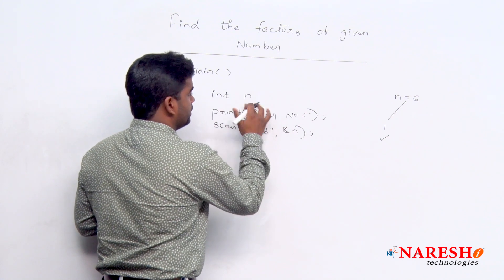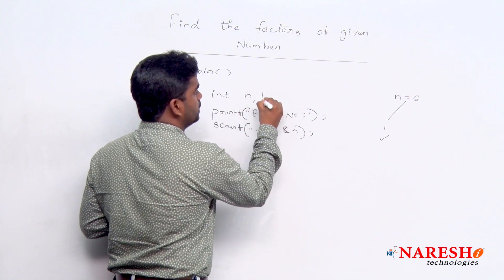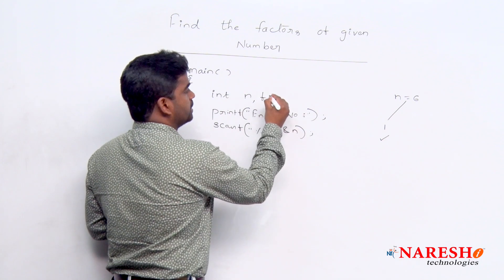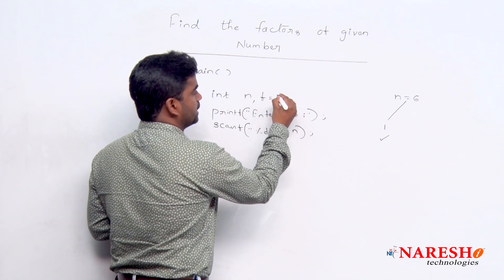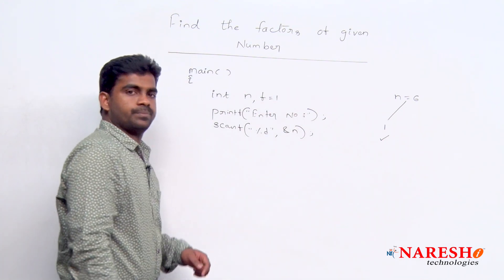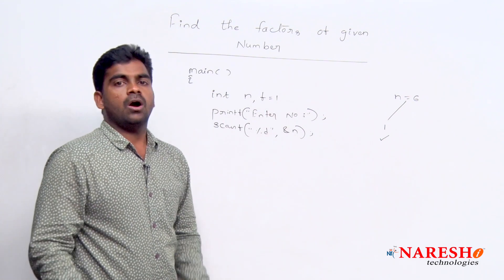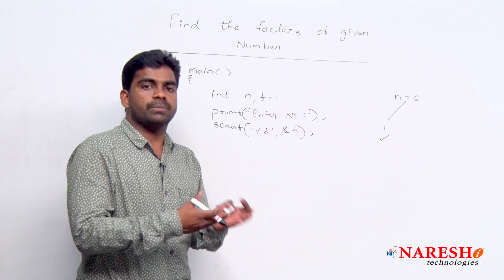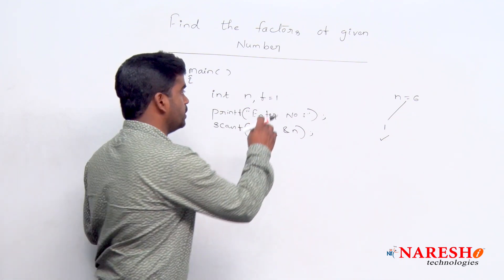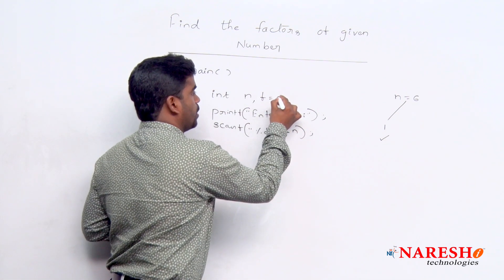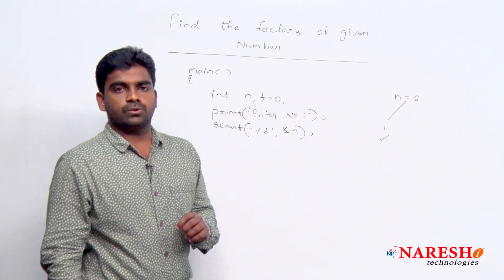Here we are taking one variable, suppose factor count f. That initial value we are taking like 1. Or for example, I want to check from the beginning also, means we start that factor count is 0 only.